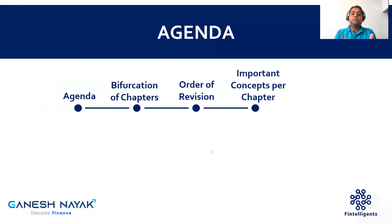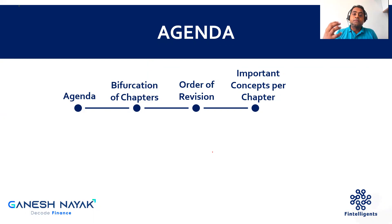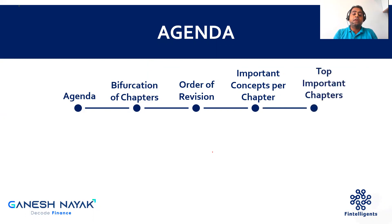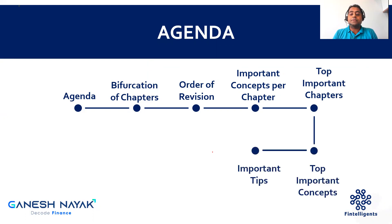I'll be talking about important concepts per chapter — this is a very important part of the video where I'll take you through the individual chapters and highlight the most important concepts or learning objectives for each chapter. I'll also be talking about the top five chapters and top five concepts for the exam, along with some final tips for preparing this book for your FRM Level 2 exam.